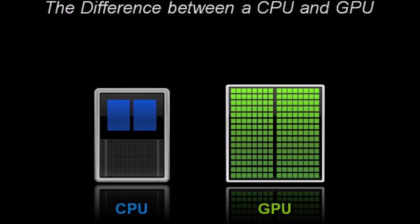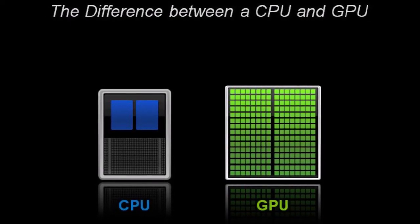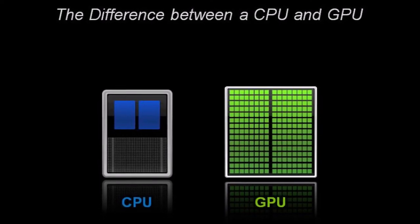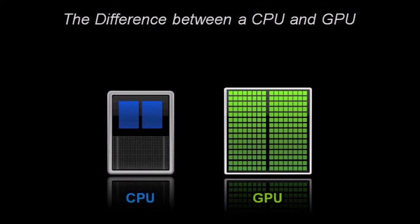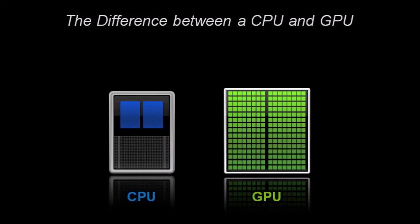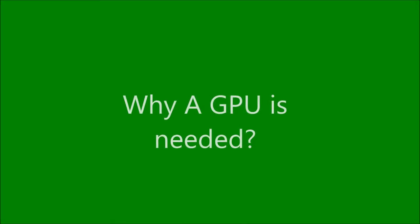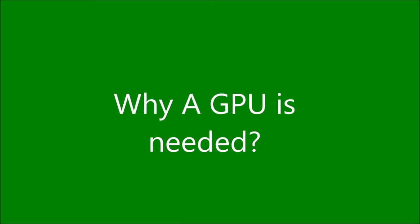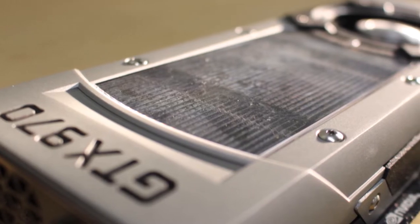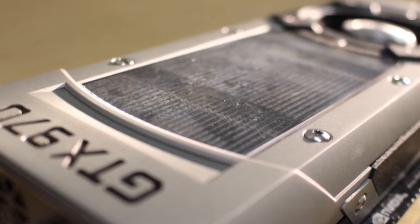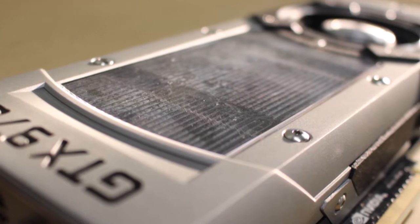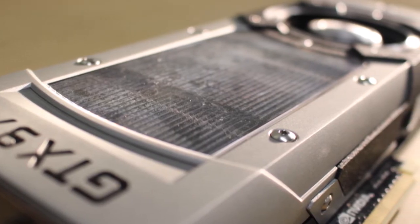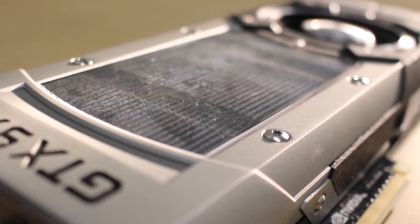The GPU is highly specialized in parallel processing and it works in correlation with the CPU for a better visual experience with applications. So the first question that arises is: why do we need a GPU? We use the CPU for performing all our computing tasks, so why not use the CPU for graphics as well? Why invest in another costly chip on the motherboard?